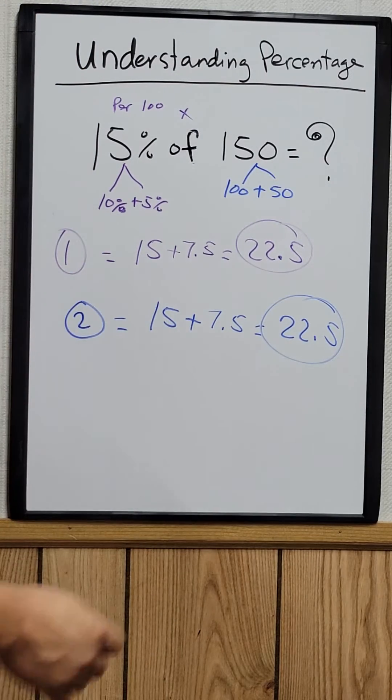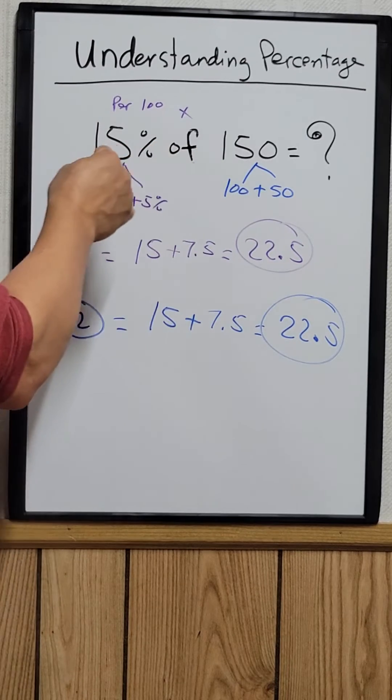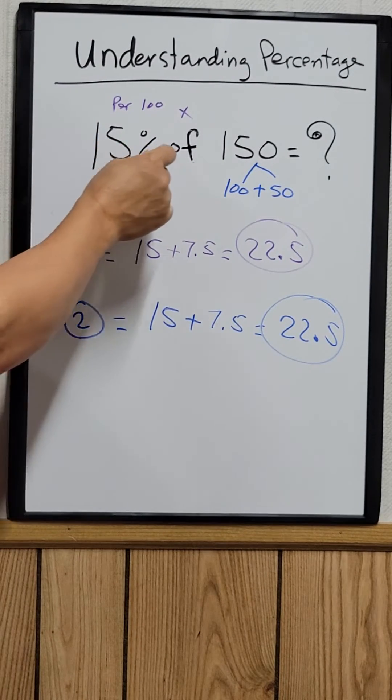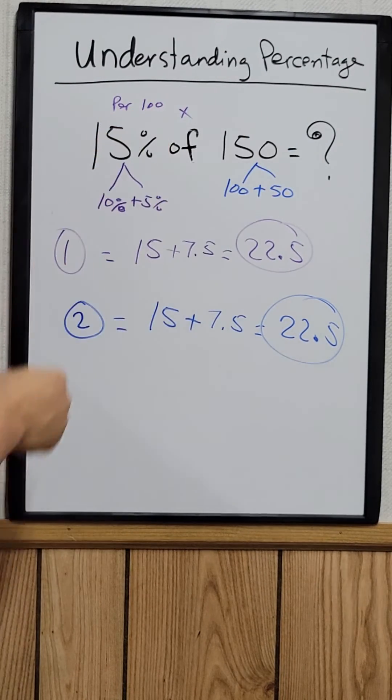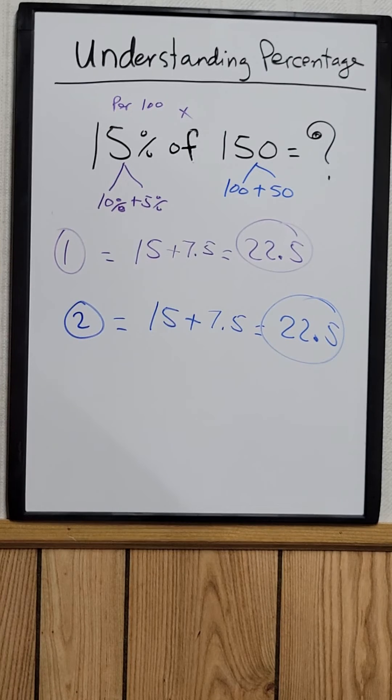So you can do either - it's reversible basically. 15% of 150, and you can say 150% of 15. It's the same thing.